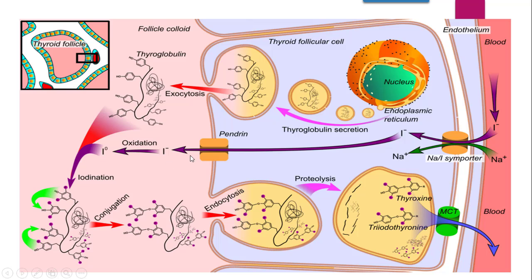In the lumen, the iodide gets oxidized from iodide (I⁻) to its oxidized state iodine (I⁰). This reactive iodine will then iodinate the thyroglobulin at its tyrosyl residues. This thyroglobulin has approximately 115 to 120 tyrosyl residues. It then undergoes a process called conjugation, where the adjacent tyrosyl residues combine. These two tyrosine residues are connected through an oxygen linkage and form the hormones thyroxine and triiodothyronine, differing only in iodine count.